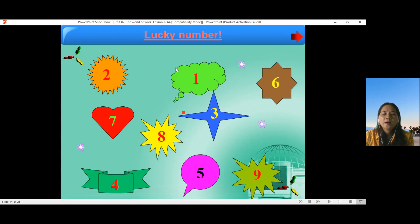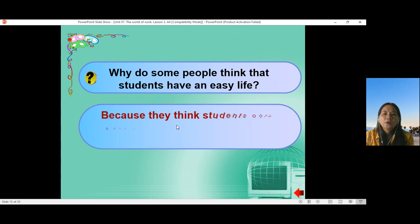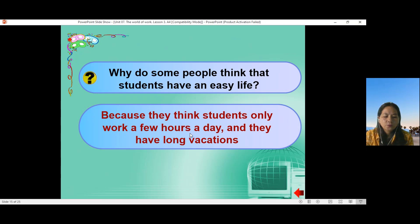Cô có một trò chơi lucky number. Các bạn trả lời những câu hỏi này dùng cô. Năm mật quân. Một câu hỏi đầu tiên. Hi. The question. Why do some people think that students have an easy life? Rồi. Cô mời một bạn trả lời dùng cô. Okay, because they think students only work a few hours a day and they have a long vacation. Về nhà các bạn trả lời vào vở dùng cô. Câu này là câu A trong sách giáo khoa trang bảy mươi lăm.